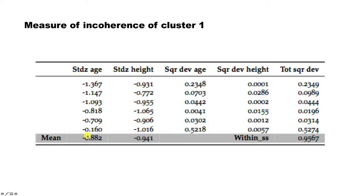Here we are dealing with standardized values as opposed to the original values. Several slides earlier we computed the standardized values by doing (x − μ) / σ. These are the standardized values of age and height representing cluster one — that's why they are all negative, since all the values were at the lower end of ages and heights. This total measure of variability calculated on standardized values is called within SS, or within sum of squares — that is, the sum of squares within a cluster. This terminology appears when you use R and perform cluster analysis.